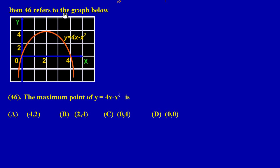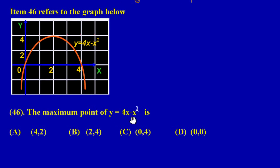Item 46 refers to the graph below. Here we have our graph or quadratic curve. It states in 46 the maximum point of y equals 4x minus x squared is. So really they're asking us for the maximum point of this parabola or quadratic curve.